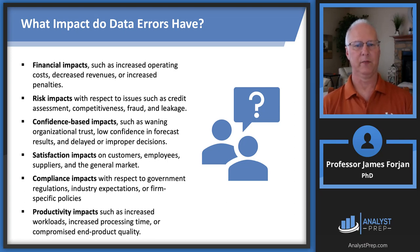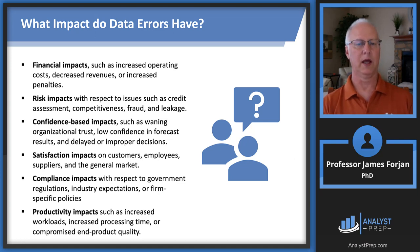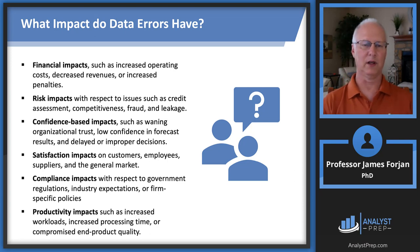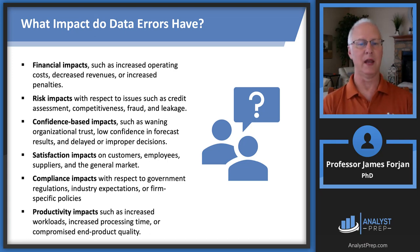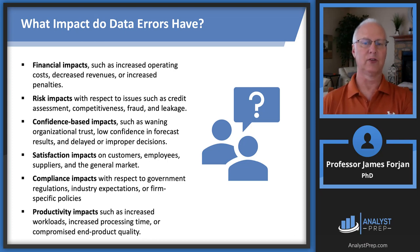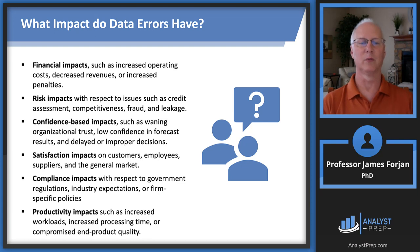Confidence-based impacts: if we're consistently reporting and correcting data errors and making forecasts based on incorrect and inaccurate data, how can we have any confidence in our forecasts or estimates? That can leak over into the supply chain. Notice the fourth impact covers customers, employees, suppliers, and the general market — so the supply chain on both sides can lead to satisfaction impacts.